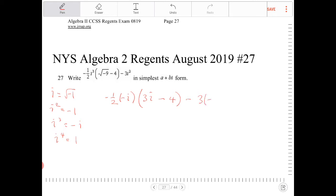So i squared is negative one. Let's continue simplifying this. So the negative and negative in the front here becomes positive. So I have one-half i times three i minus four plus three.